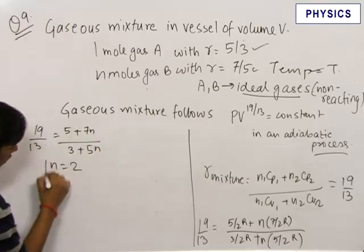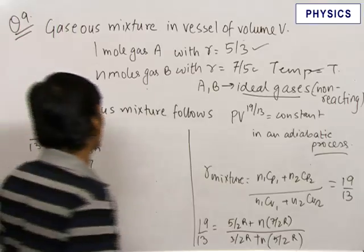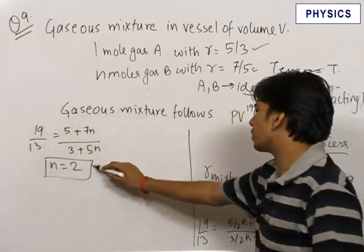On solving this we get n is equal to 2. So the final answer for the number of moles of gas B comes out to be equal to 2.